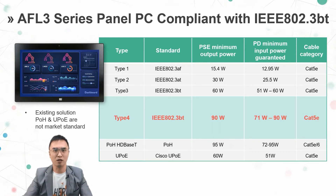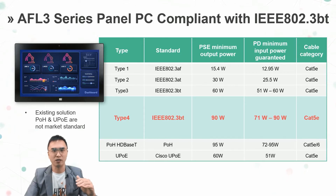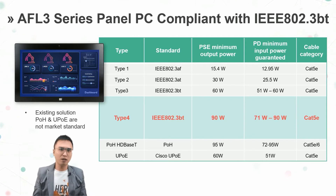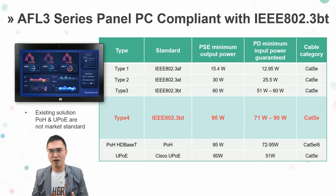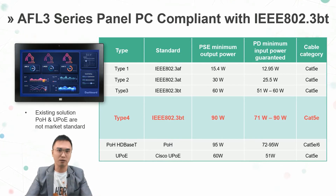Legacy HMI devices and similar platforms need more than 80W. I have good news: the IEEE 802.3bt standard was released in 2018. The PSE, meaning the power supply equipment, supports up to 90W output power, and the PD device, the receiver, supports 71W to 90W. However, non-standard solutions like Cisco's UPOE and HDBaseT are inconvenient for customers because they must keep confirming PSE and PD device protocol compatibility — not a good solution. IEI provides the IEEE 802.3bt standard PSE port and PD device as your solution.